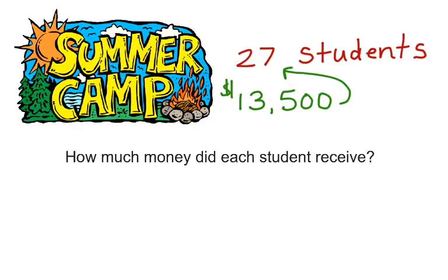Now that we've written out the information that we know and what we're trying to find out, let's write an equation that describes the situation. We can say that 27 students times some amount of money, x, is going to be equal to $13,500 because $13,500 was the total amount of money available for the scholarships.